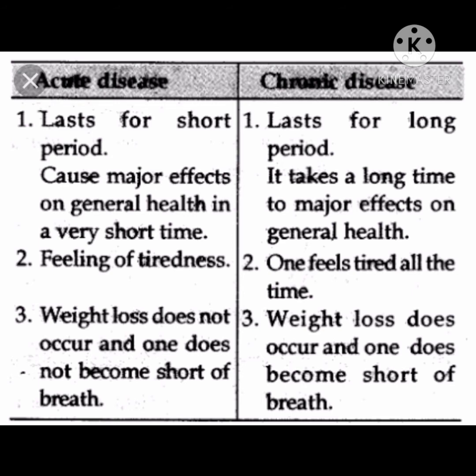Acute diseases do not cause long-term bad effects or side effects to human health. Examples include cold, cough, typhoid, cholera, etc. Whereas chronic diseases cause drastic long-term effects on human health because the person needs to consume medicine for a long duration, which can negatively influence important internal vital organs. Examples of chronic diseases include cardiovascular or heart diseases, tuberculosis, diabetes, and cancer.